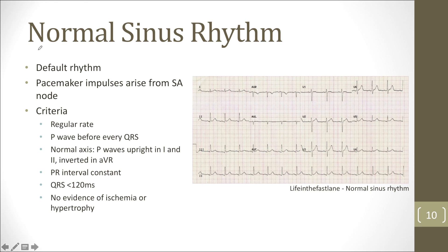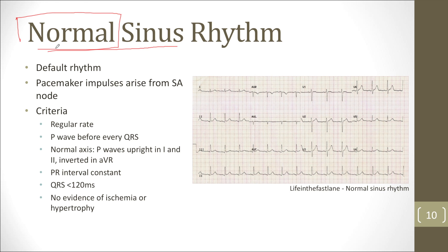The last thing I want to talk about is normal sinus rhythm. Normal sinus rhythm essentially means everything is normal: a normal rate, regular rhythm, normal axis, all intervals within reference range, and no evidence of ischemia or hypertrophy. It's the default rhythm — everything is just as it should be.